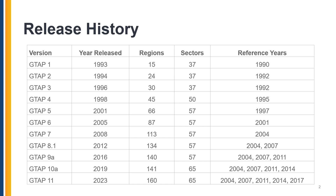Between release years, GTAP users can update their database to represent a more recent reference year for the countries of interest. This should be done with sensible assumptions and a well-balanced economic model so that your updated database remains in equilibrium and does not bias the results of your policy simulations.